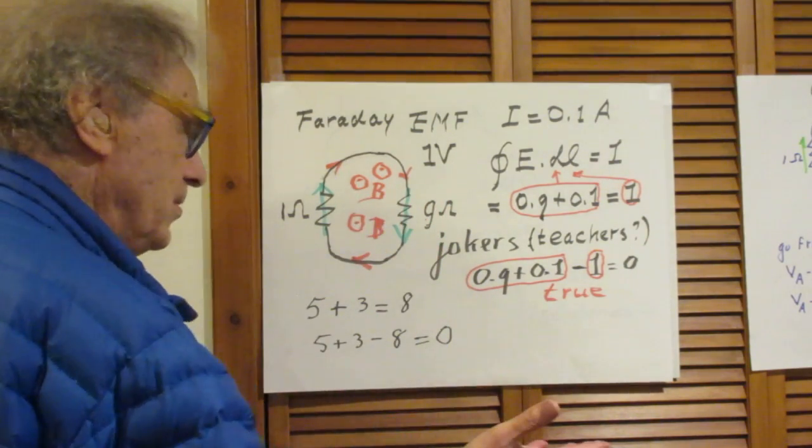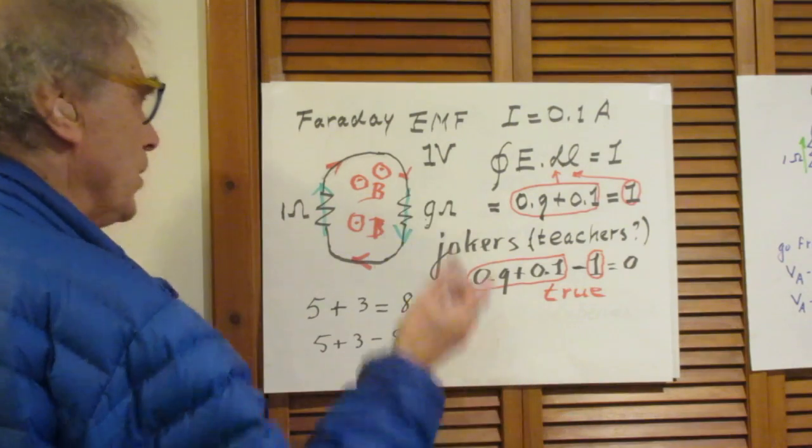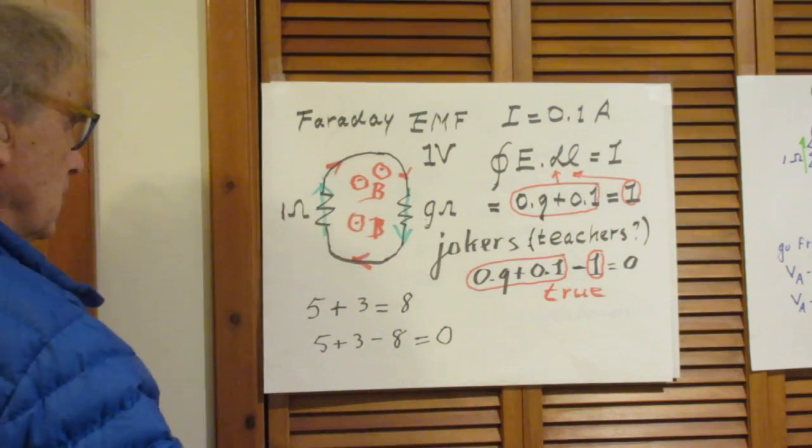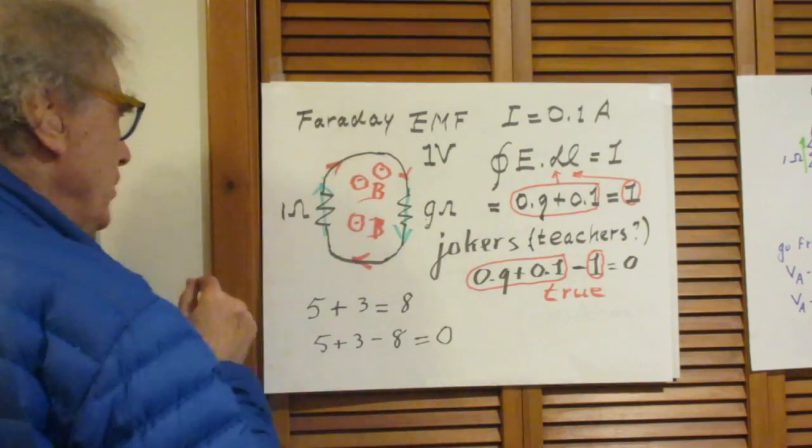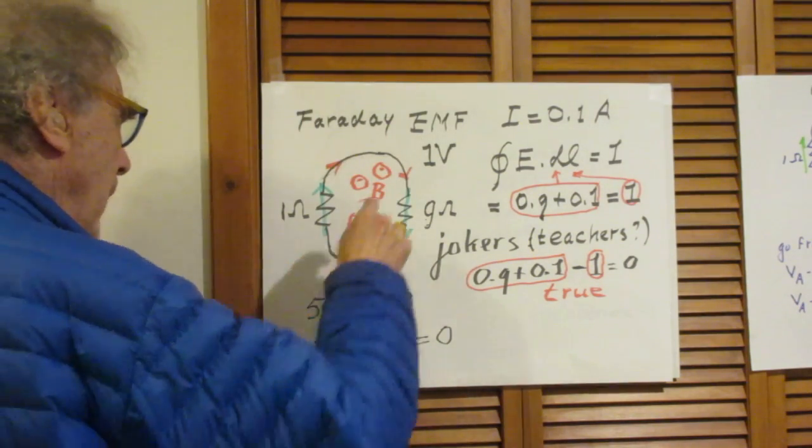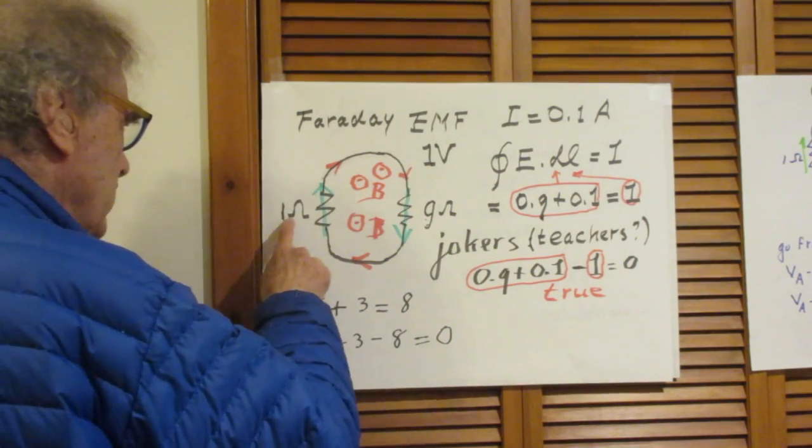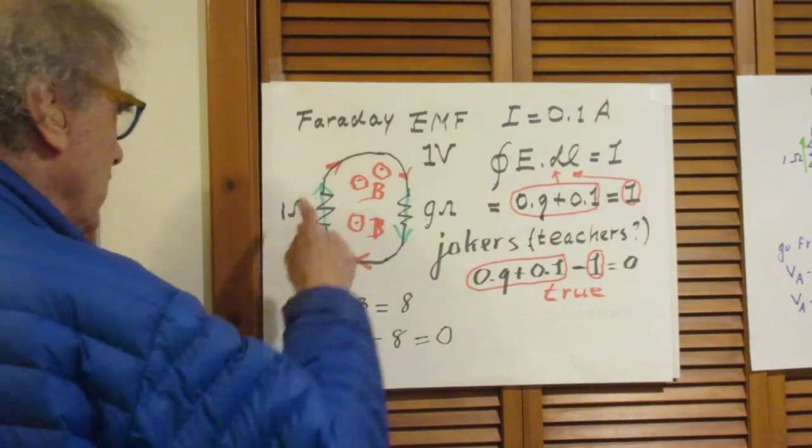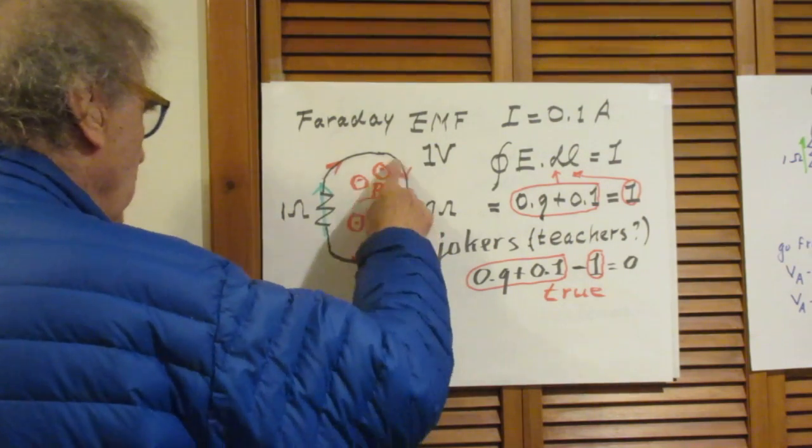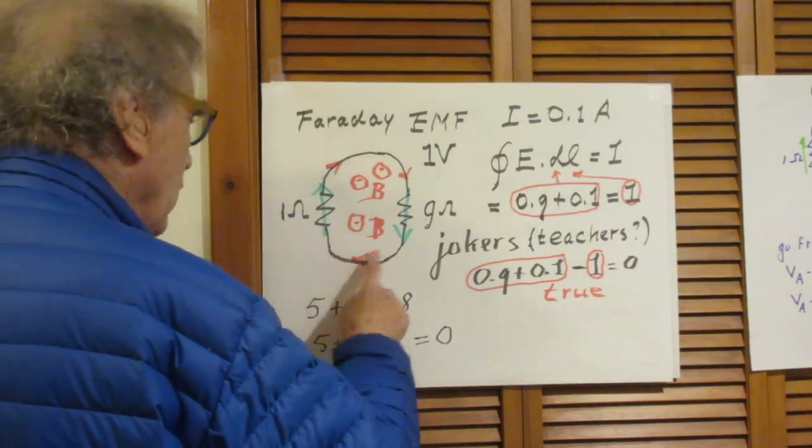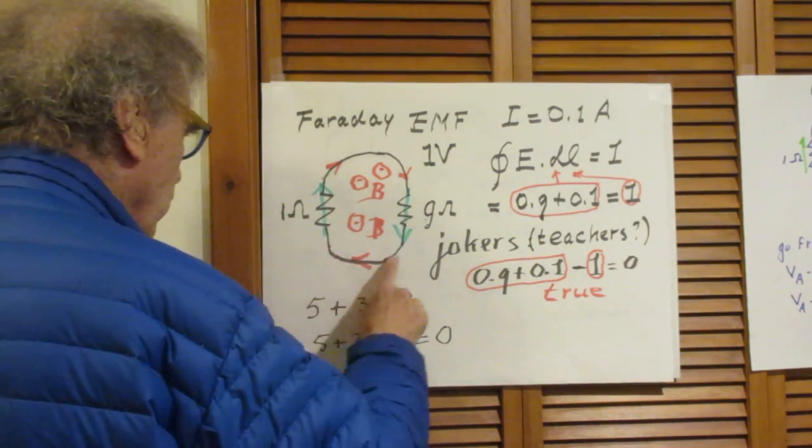It's given by change in flux, but it's now 1 volt and the current is in this direction. So this induced EMF is generating in this resistor an E field in this direction and in this resistor an E field in this direction. No E field here because this wire is near zero resistance. Think of it as zero and this wire is also near zero.